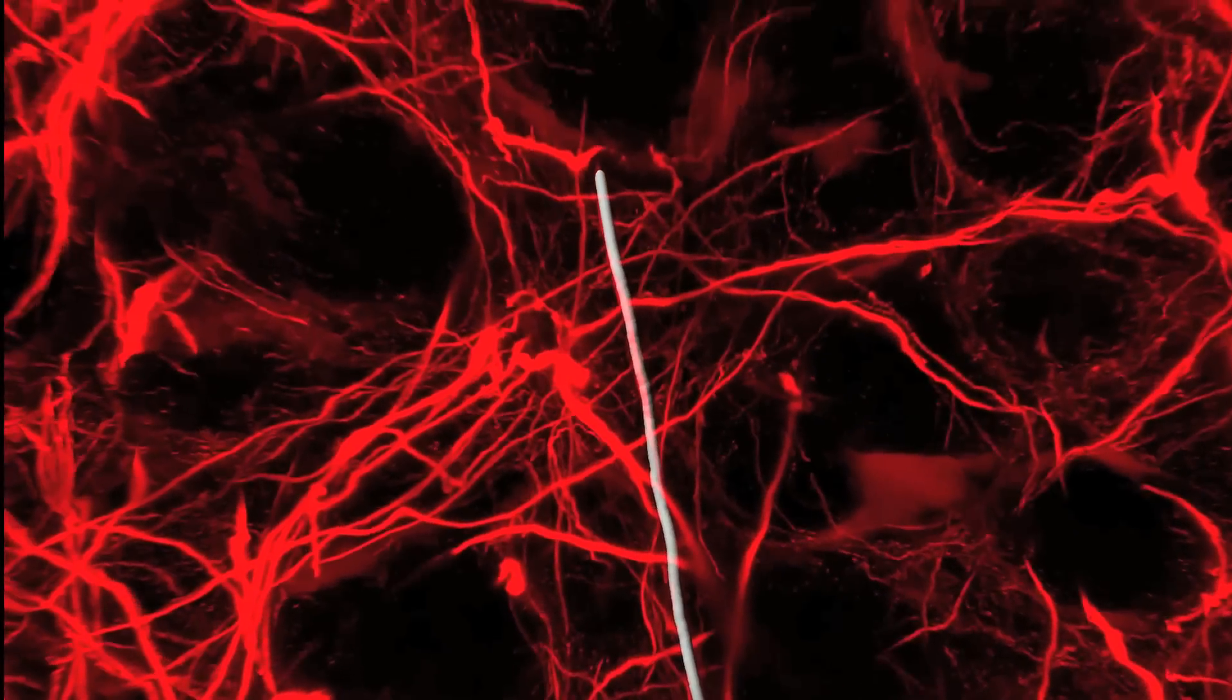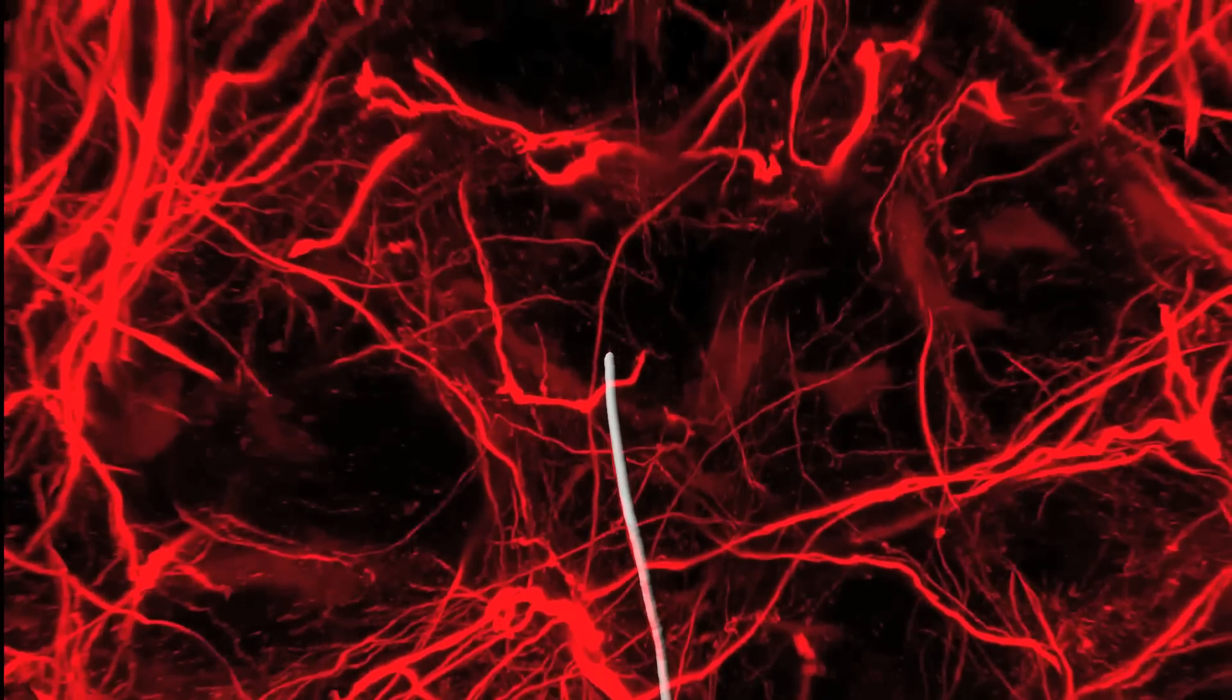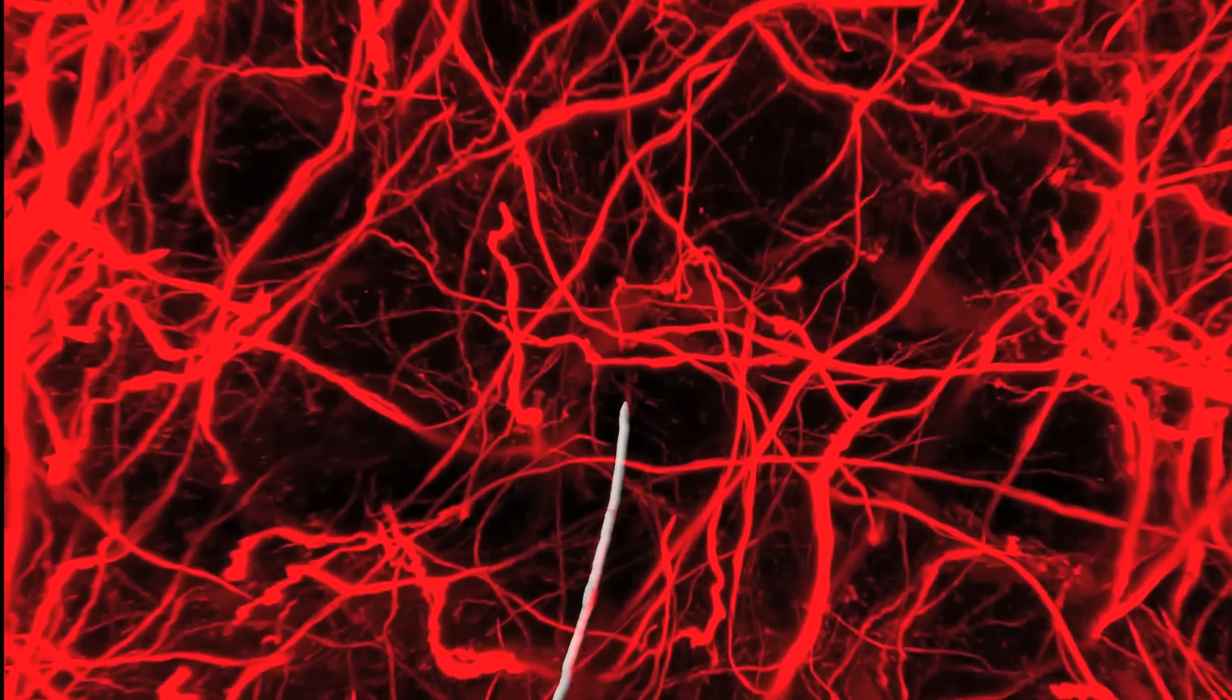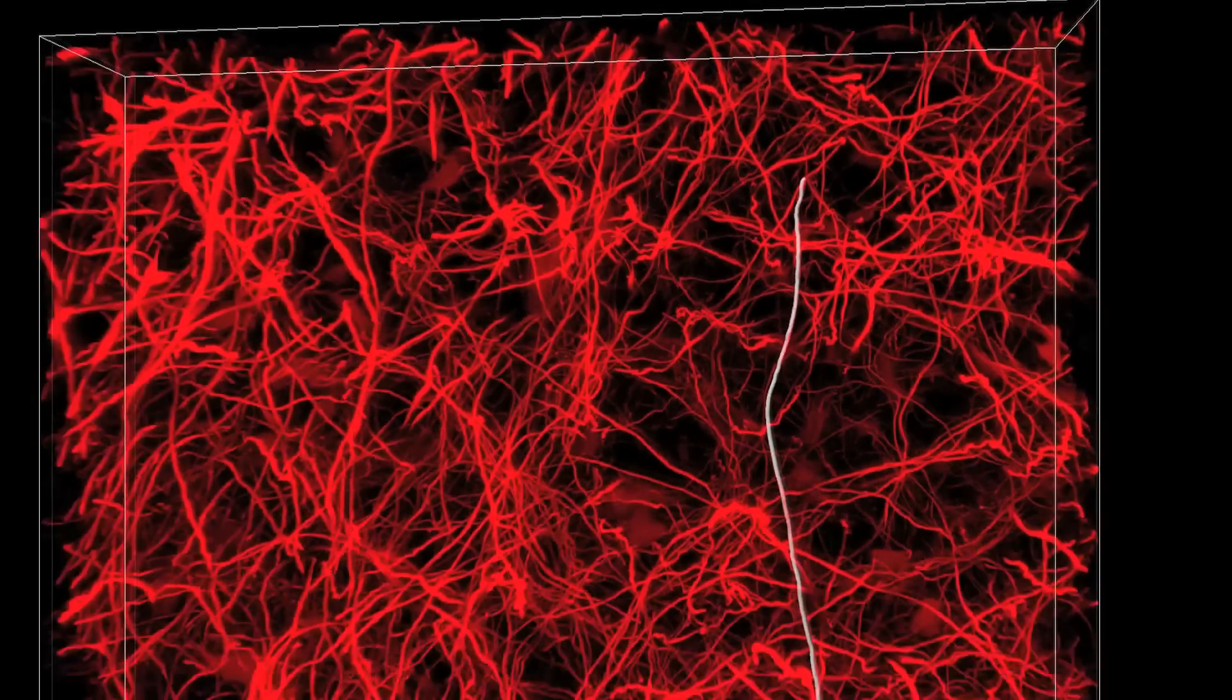Now, with a new method developed at MIT, researchers have a new way to image brain tissue at not just one but at multiple scales, allowing them to peer at molecules within cells or take a wider view of the long-range connections between neurons.